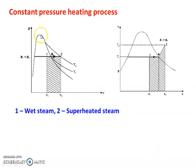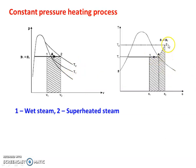Next is the constant pressure heating process. In this heating process, the quality of the steam increases from wet steam to superheated steam. In the constant pressure process PV diagram, the line is horizontal because pressure is constant. Initially the steam is wet, and as heat is added the quality increases until it becomes superheated steam, with initial temperature T1 and final temperature T2. The area under the temperature-entropy diagram represents heat transfer, and the area under the PV diagram represents work done.